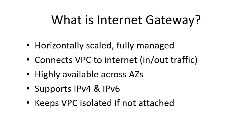What is an Internet Gateway? An Internet Gateway, or IGW, is a core AWS networking component that makes Internet connectivity possible inside a VPC. It is horizontally scaled and fully managed, meaning you don't have to worry about performance or capacity — AWS automatically takes care of it.